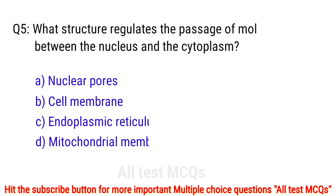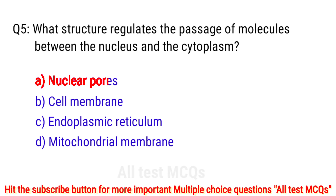Question number 5. What structure regulates the passage of molecules between the nucleus and the cytoplasm? The right answer is option A: nuclear pores.